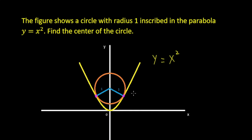Since the two curves intersect at those two points, if we draw a tangent line at each intersection point, that tangent line should be tangent to both the circle and the parabola. Also, the radius of the circle and the tangent line are perpendicular to each other.